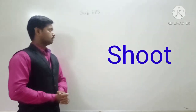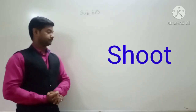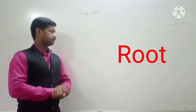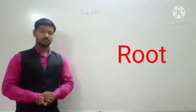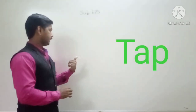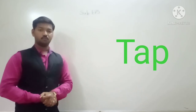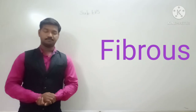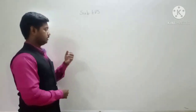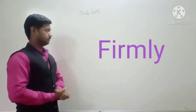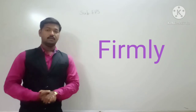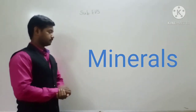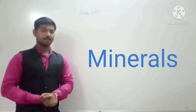Now the vocabulary words: Number 1 — Shoot. Number 2 — Root. Number 3 — Tap. Number 4 — Fibrous. Number 5 — Form. Number 6 — Minerals. Number 7 — Swollen.